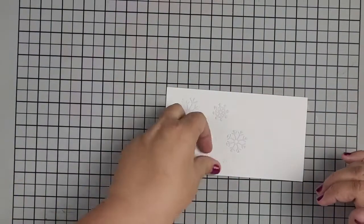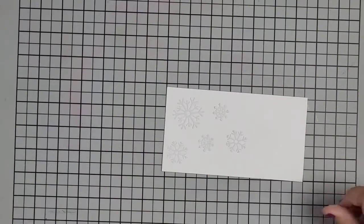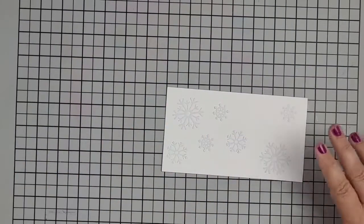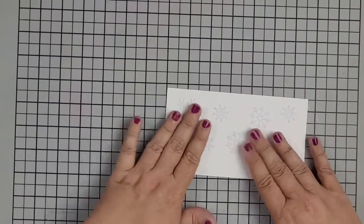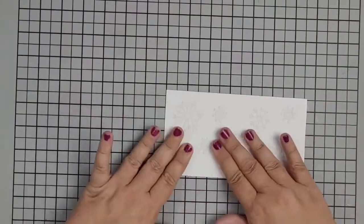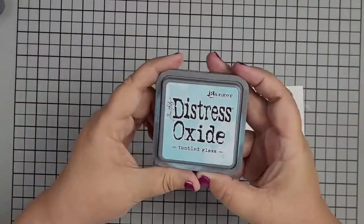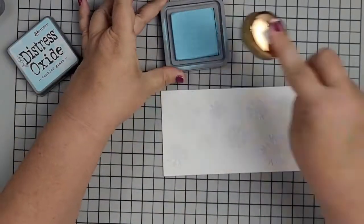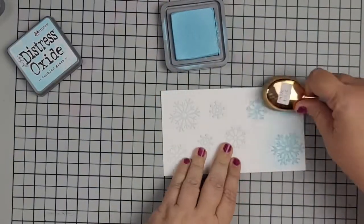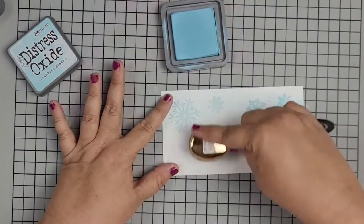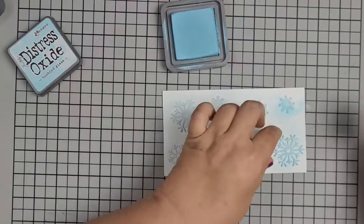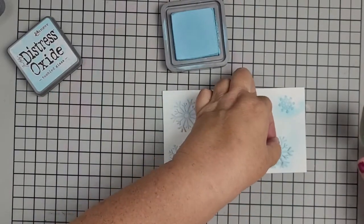So what I did is I took the snowflakes from the Winter's Essentials and cut them out using Inkadinkadoo masking paper. I cut them each a few times and using tumbled glass and my blender brushes I'm just going to do some inking on this background.